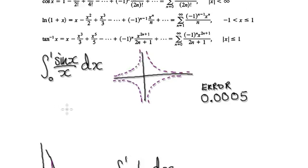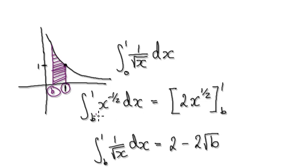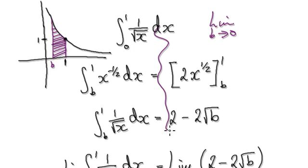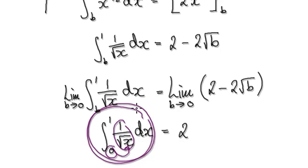We have done something like this in the past. Remember, with 1/√x, dead on 0 it breaks down. But we can still work out the area because we integrate from b to 1 and then allow b to approach 0. That gives us a legitimate answer of 2. So even though dead on 0 it breaks down, you can still have a legitimate answer.